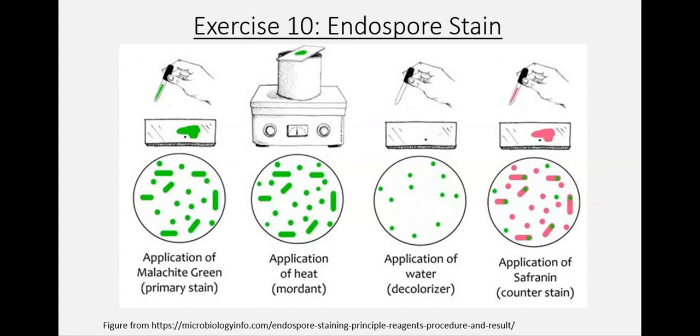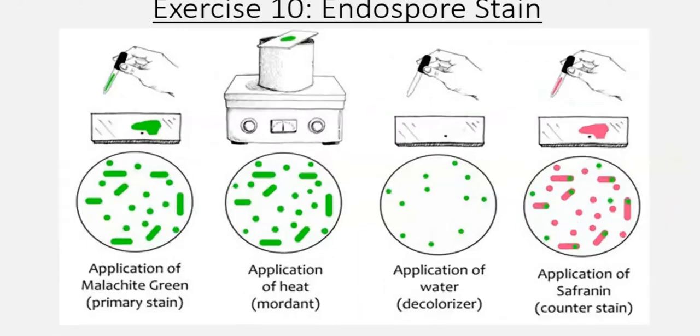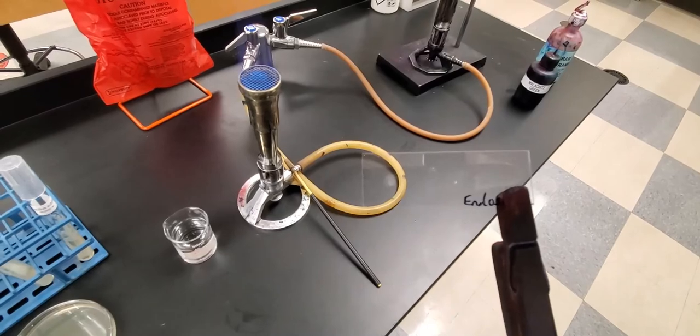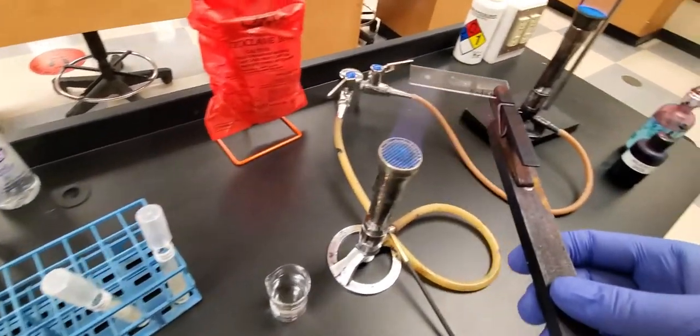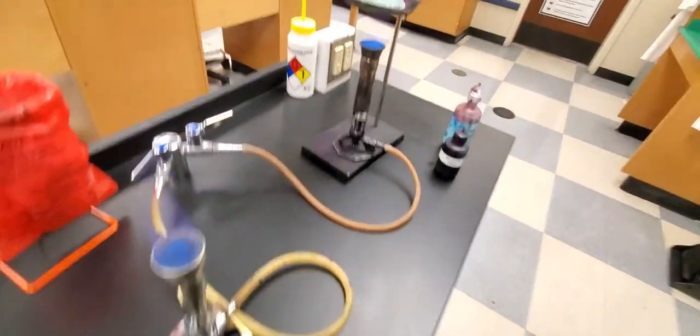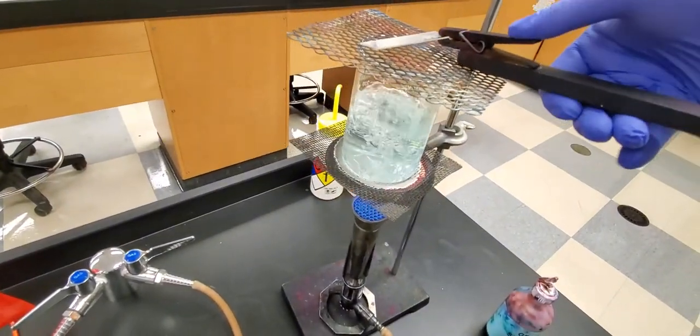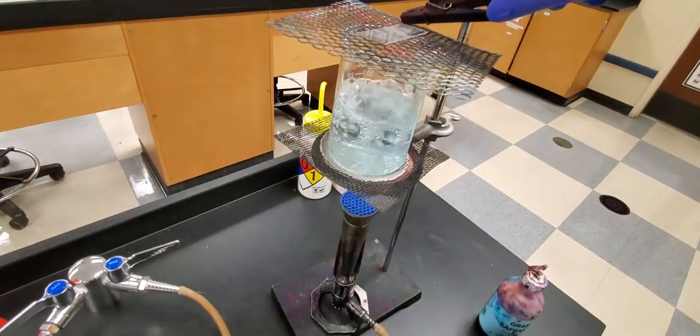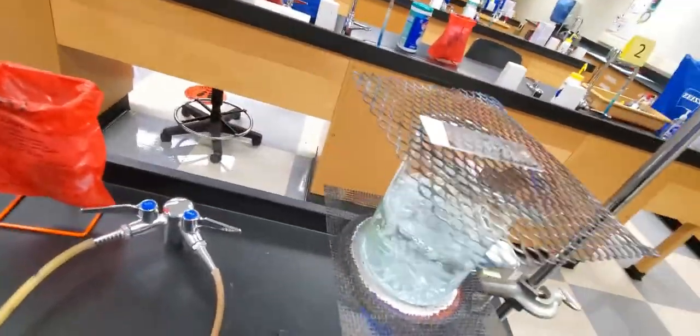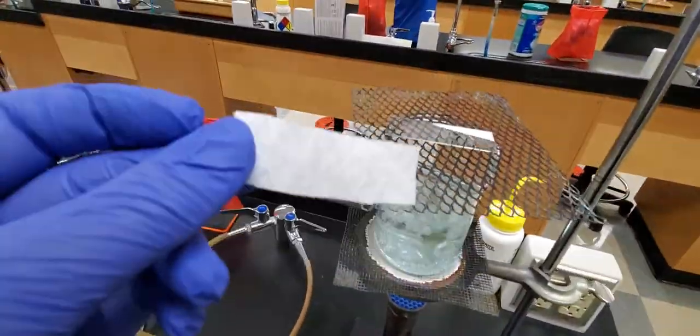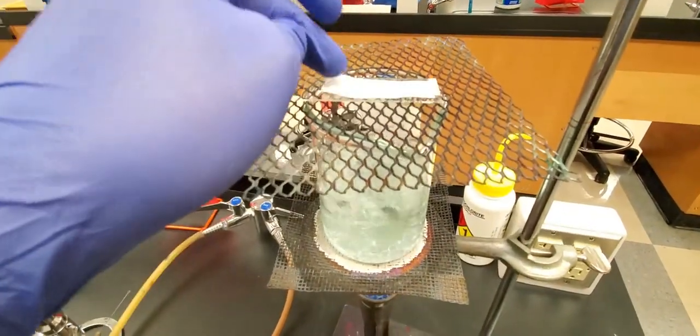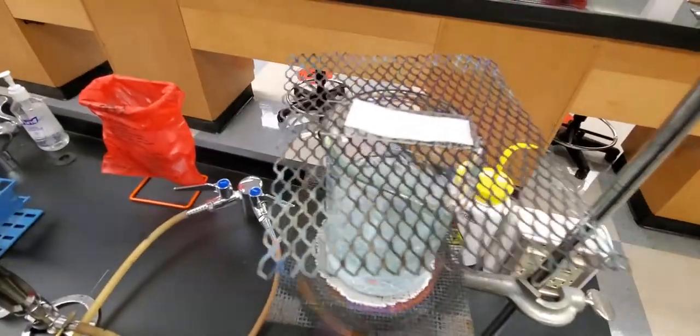Now that the smears have dried up, I'm going to just pass them through the flame one, two, three to do that heat fixing to hold them on there. Then we're going to take them and put them over this boiling water bath to give it a little bit of heat here. We will use a very high-tech piece of equipment known as a cut-up paper towel and place it right on top.